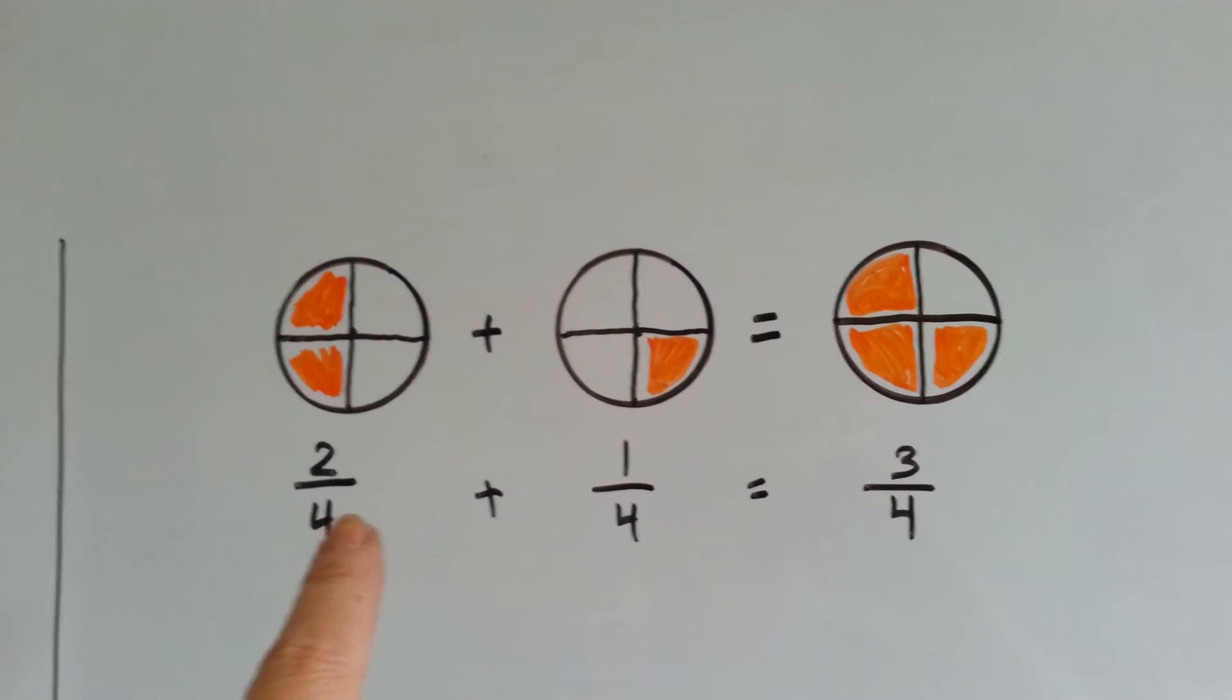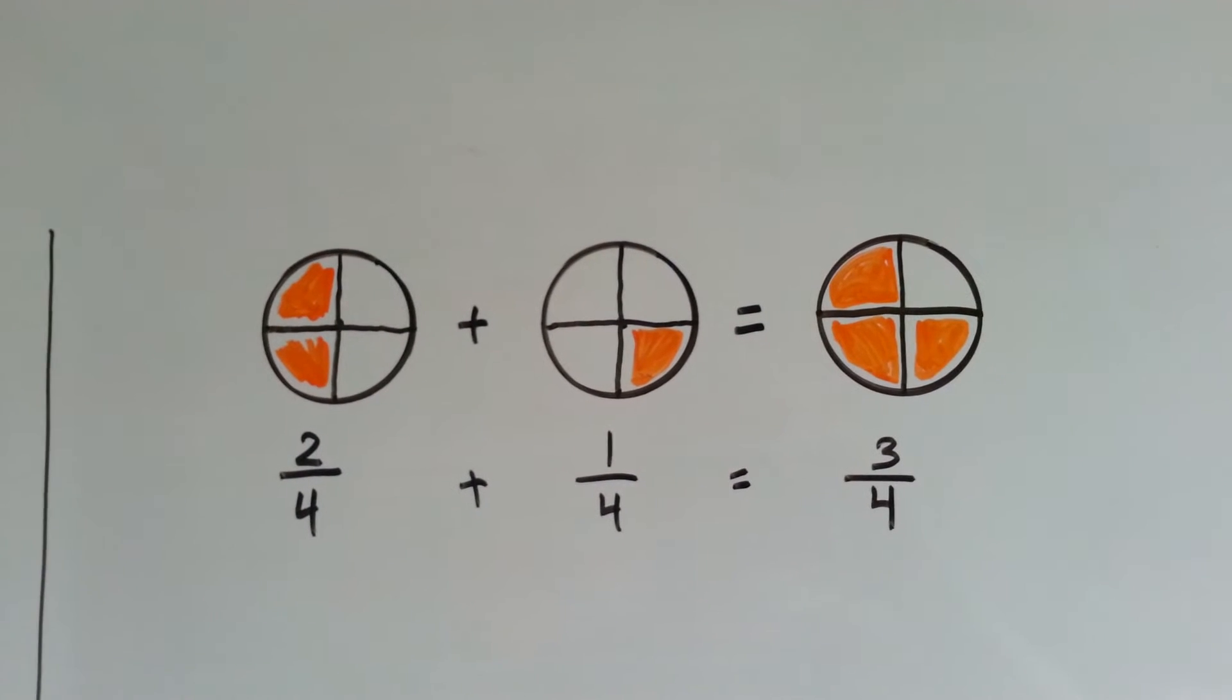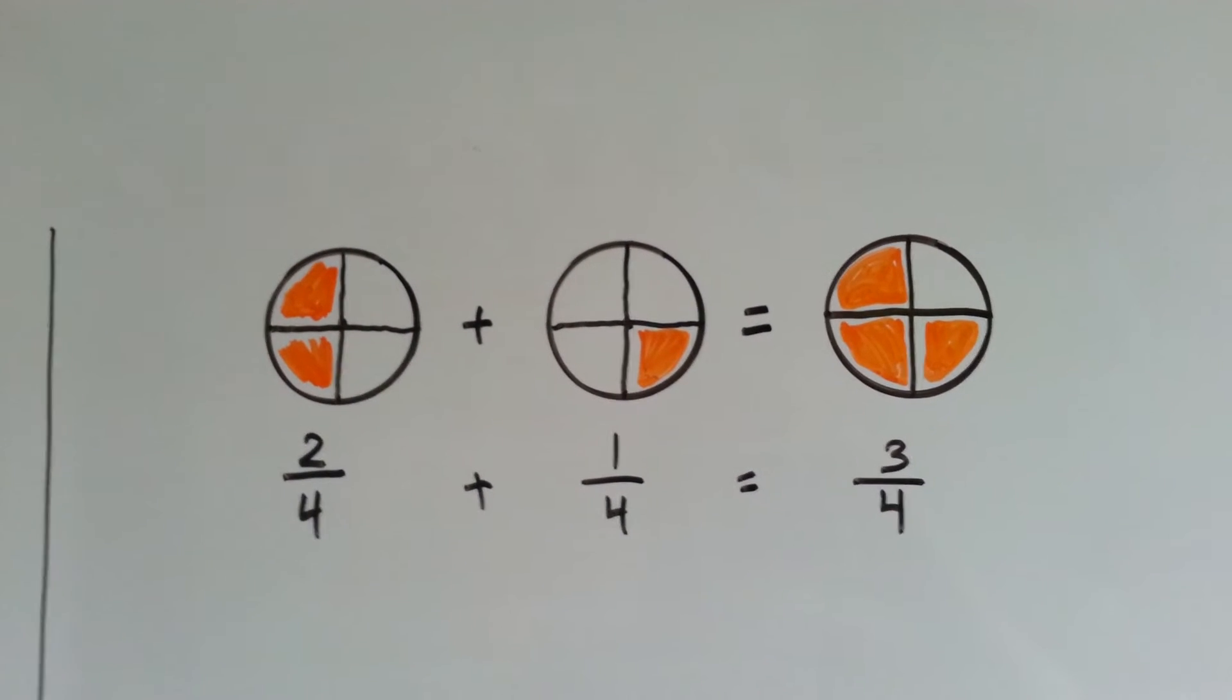Basically, what we're doing is sliding the denominator across and just adding the tops. 2 plus 1 is 3.